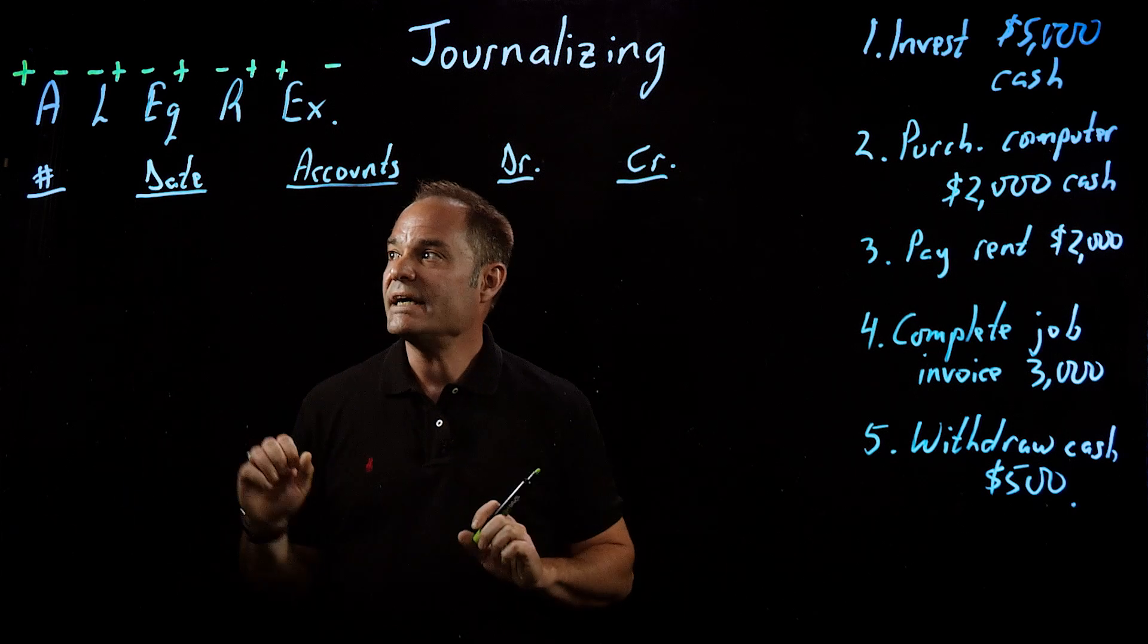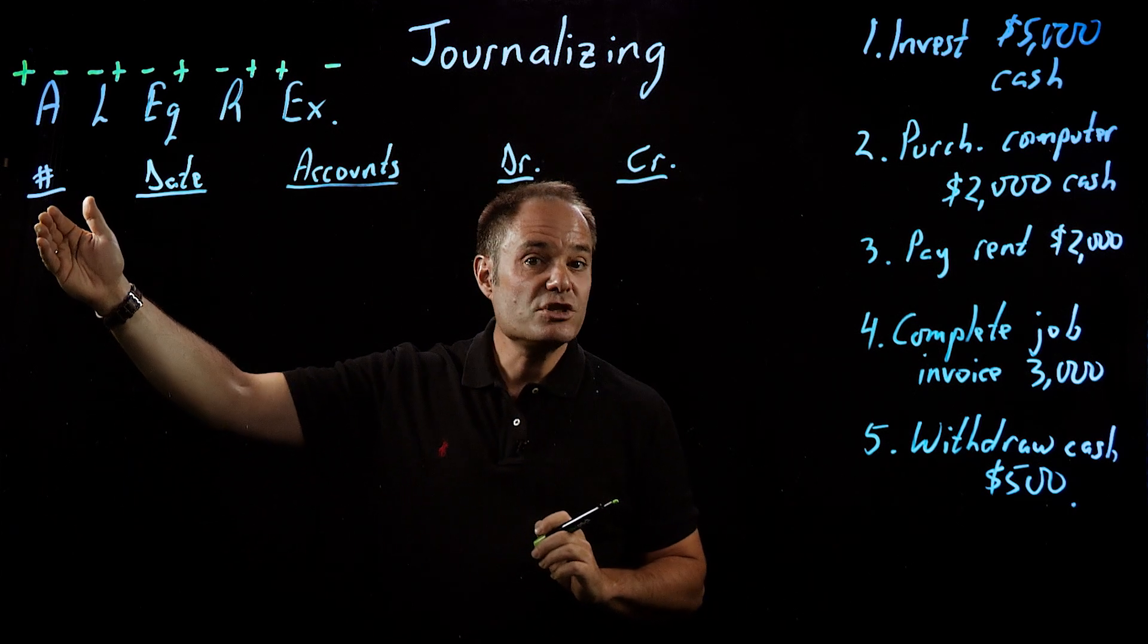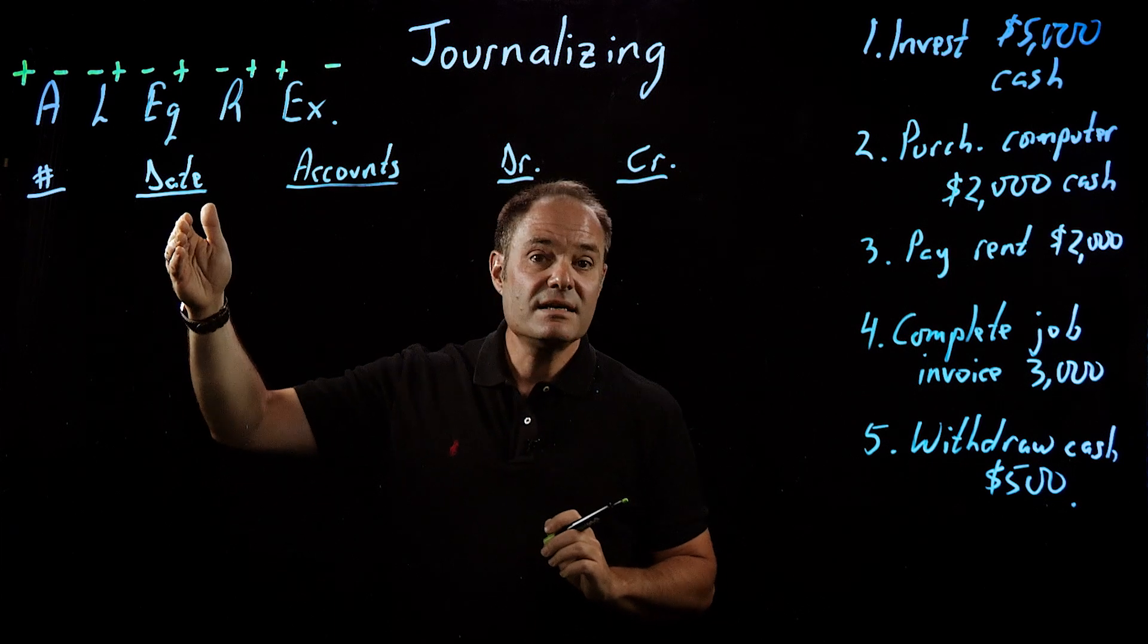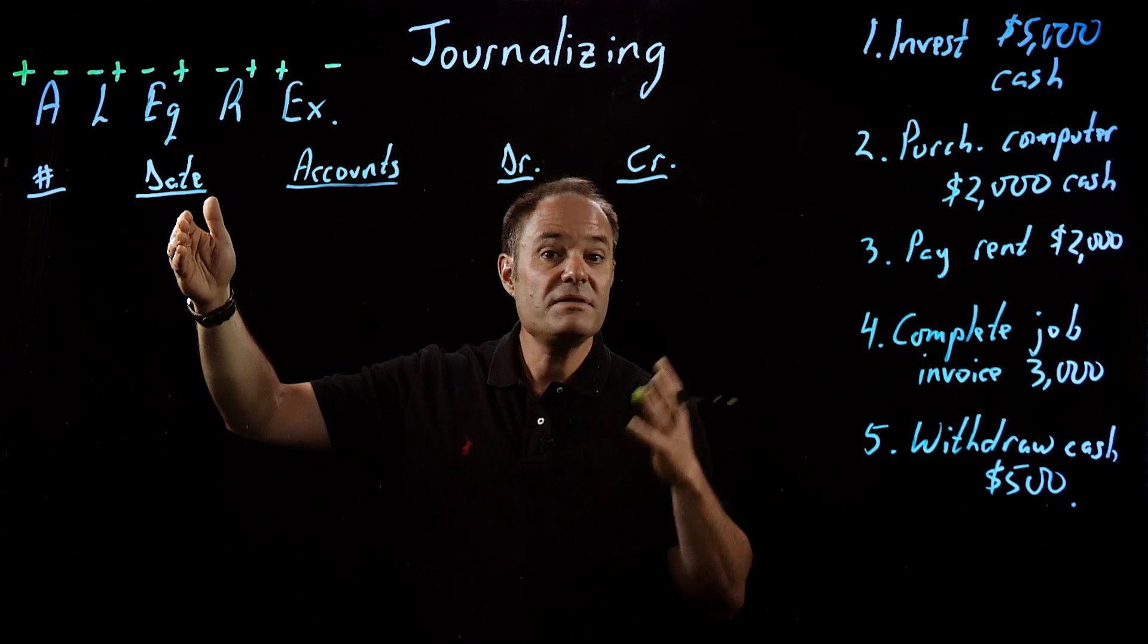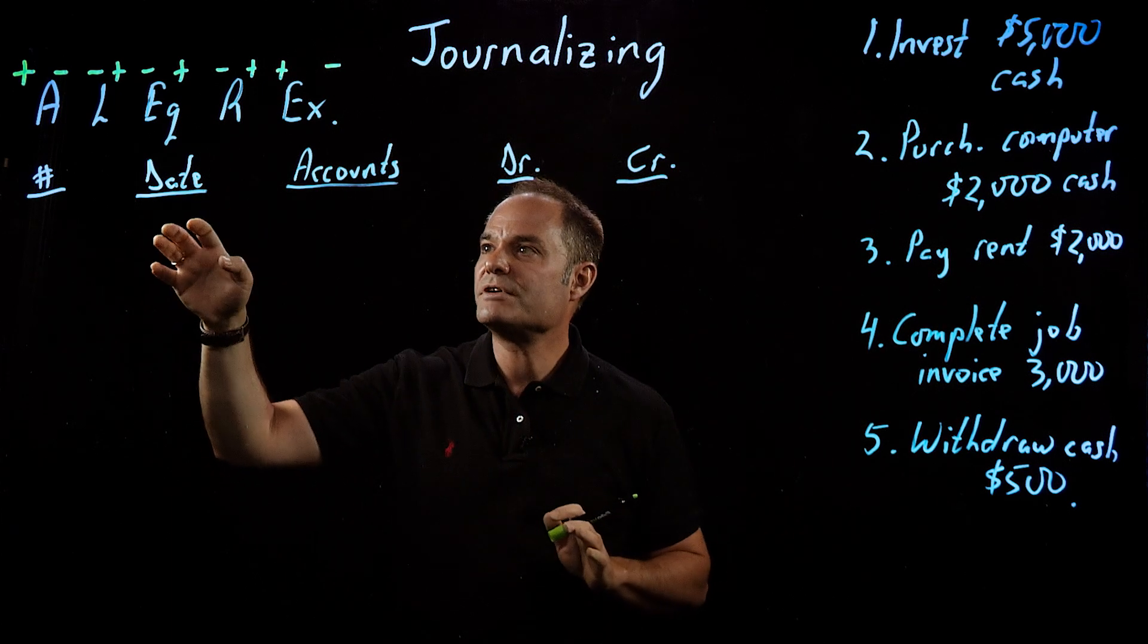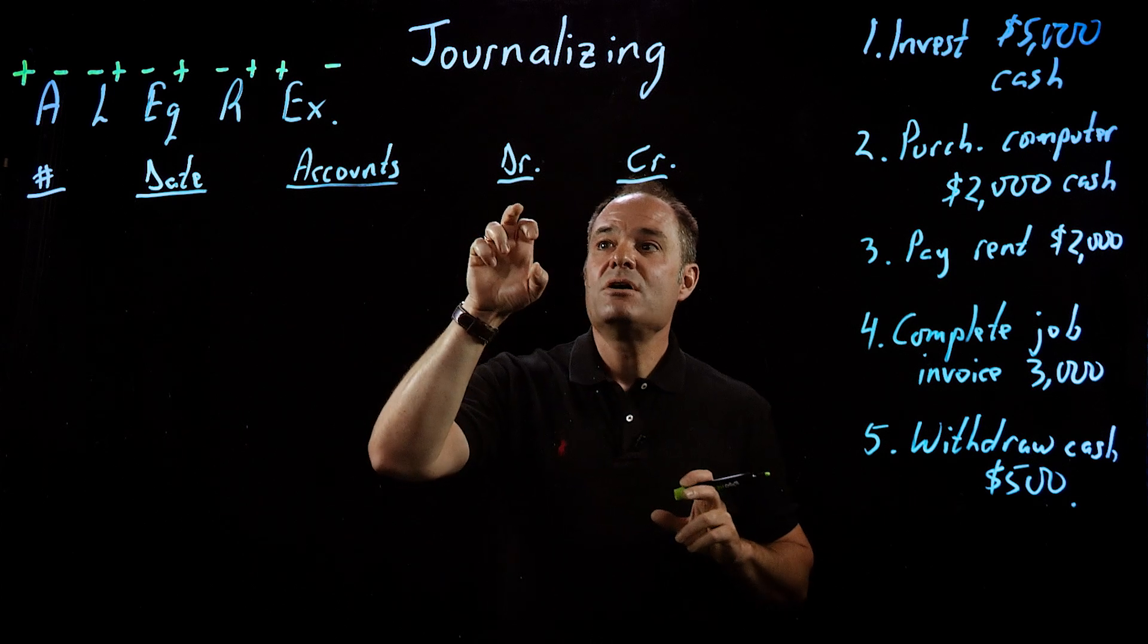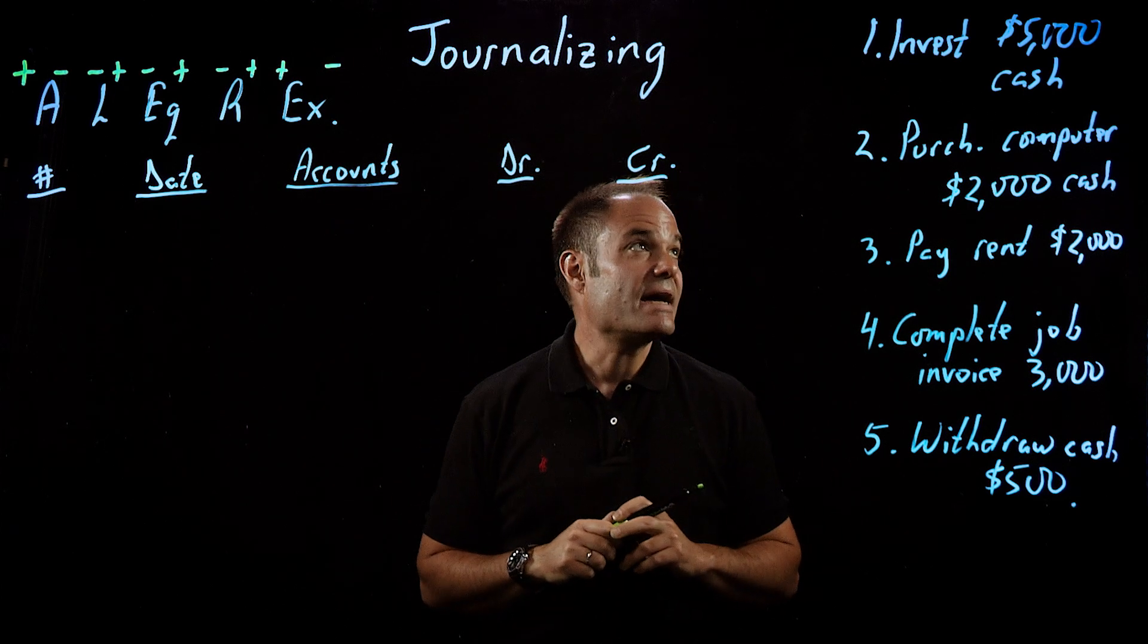This is essentially what a journal would look like. Normally, it will have the number of the transaction, then the date that the transaction took place on. That's very important, as we'll see later. We didn't put in dates here, so we'll ignore it for now. The accounts that we're going to be using, and then whether we're debiting or crediting the account.